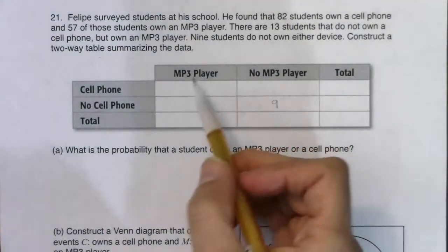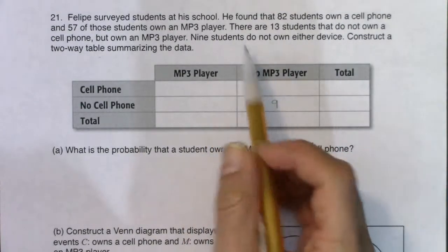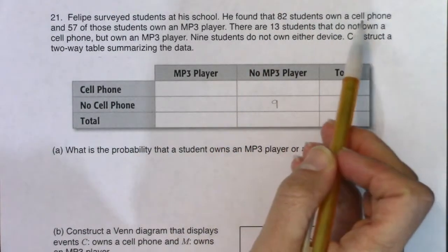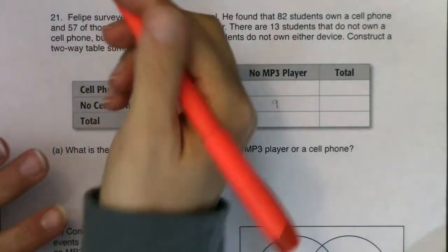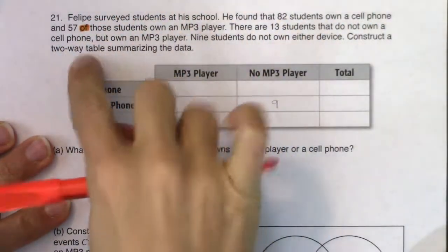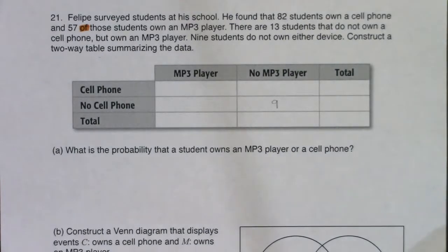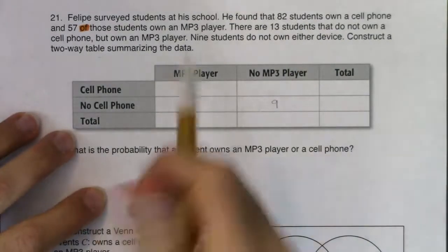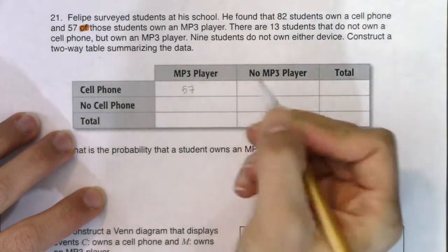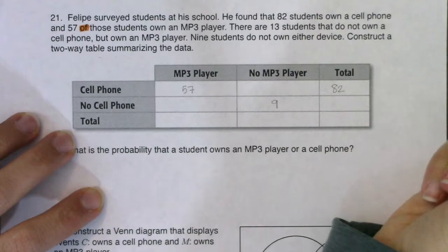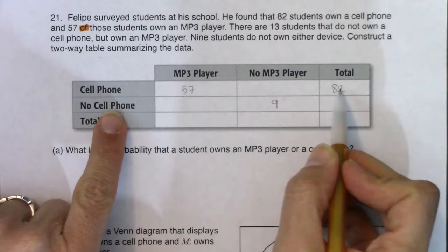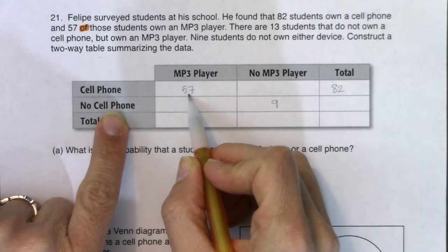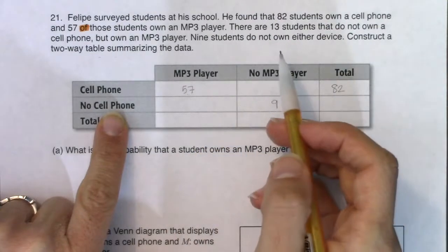I like looking at the 'both' and then 'neither.' It says he found that 82 students own a cell phone, and of those — I want to emphasize the word 'of,' that conditional phrase we always find — of these 82, 57 also own an MP3 player. So I know 57 own both, but 82 in total own a cell phone. That's how I can start to piece those two together.